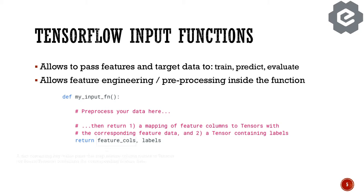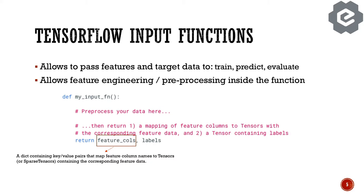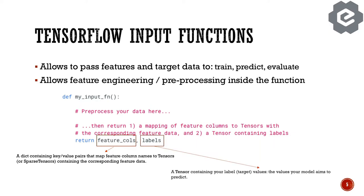The input function returns a dictionary where features are a key-value mapping between feature column names and their corresponding tensor data. On the other side, you have the labels — a tensor containing the target values, which is the actual label data.